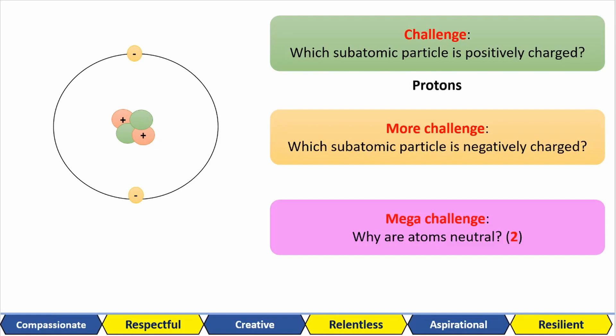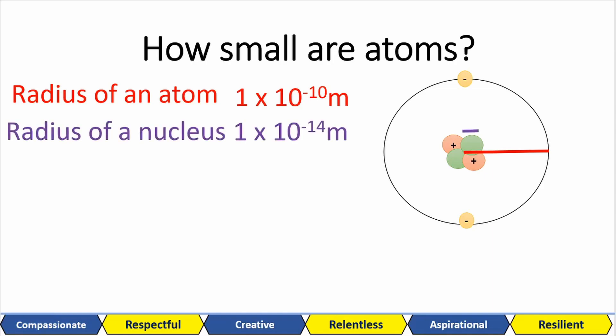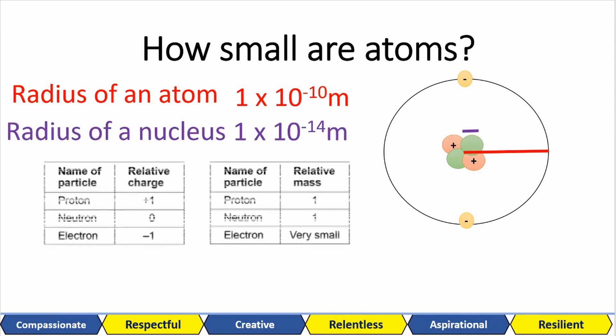Spend some time completing these challenge questions. The positives in atoms are protons and the negatives are electrons. Atoms are neutral because they have an equal number of protons and electrons. You also need to know how small atoms are. The radius of atoms is 1 times 10 to the minus 10 meters, which is the equivalent of 0.1 nanometer. The nucleus is actually 10,000 times smaller than an atom, so that's 1 times 10 to the minus 14 meters. These two tables summarize the mass and charge of each type of particle.